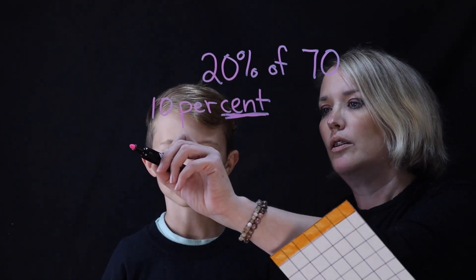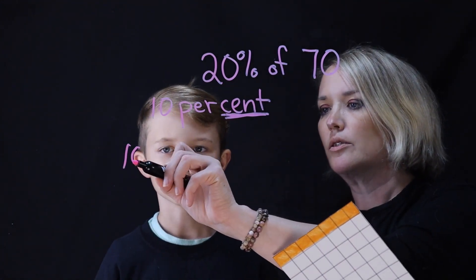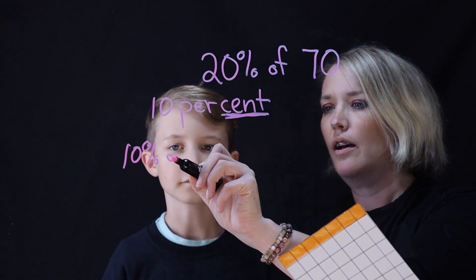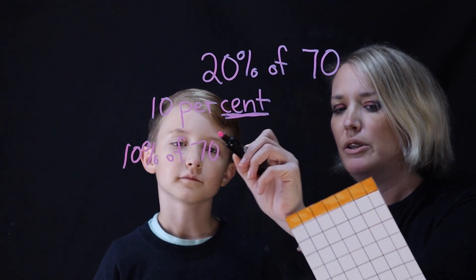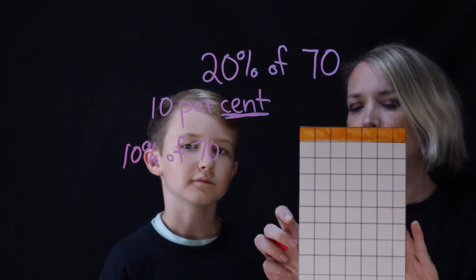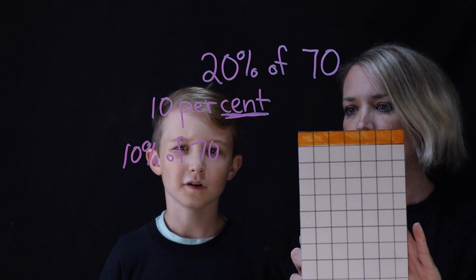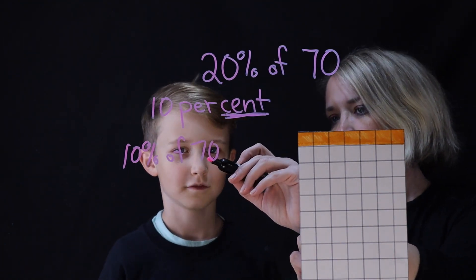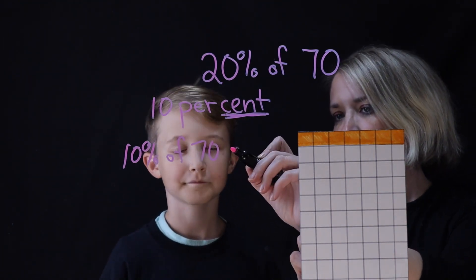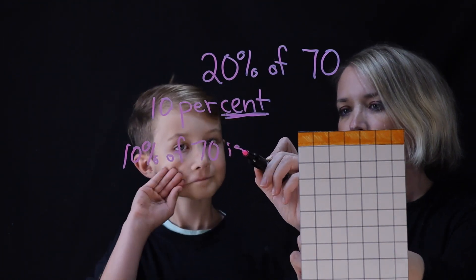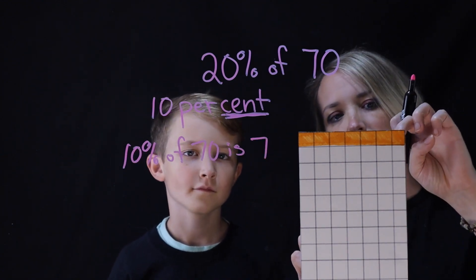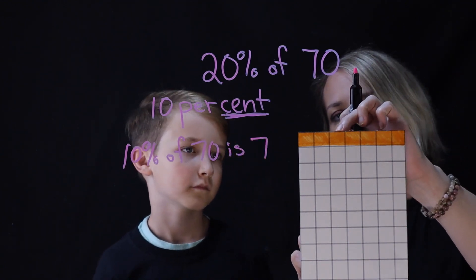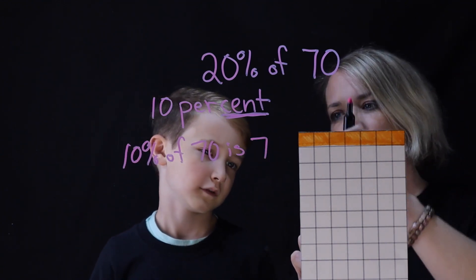So Louis, there's your 10% of 70. Let's just look. So 10% of 70, how much is that Louis? Seven. Because you just moved the decimal place over once, right? And right here, it's just the orange ones — one, two, three, four, five, six, seven.